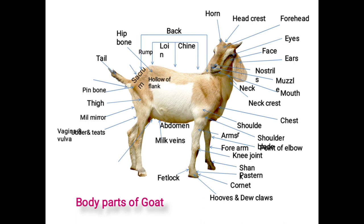Next is the vulva. The outermost portion of the female genital organ, triangular in shape and situated below the anus, is called the vulva. It has an opening with two hollow lips and is the common passage for urination and mating purpose.